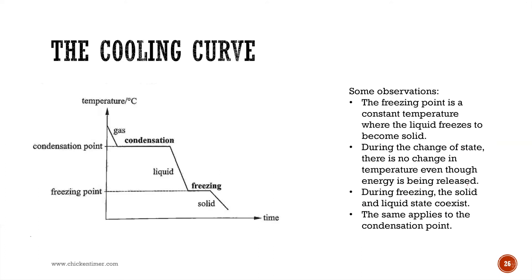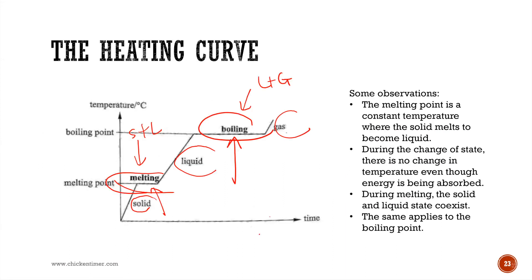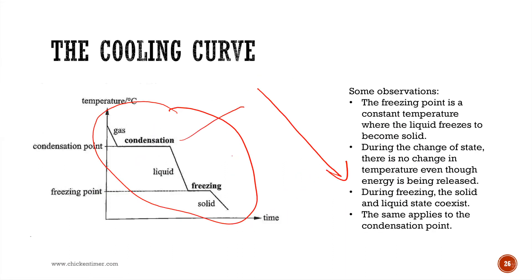The cooling curve is the reverse — you take a gas, cool the temperature down, allow the water vapor to condense into liquid, then cool it further to cause freezing. The temperature graph goes downward and again shows two horizontal flat lines: one for condensation and one for freezing. During condensation, gas and liquid coexist; during freezing, liquid and solid coexist.